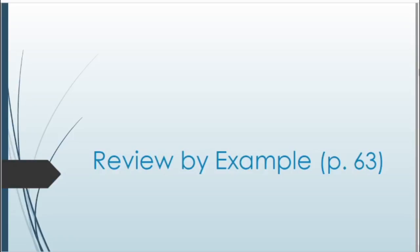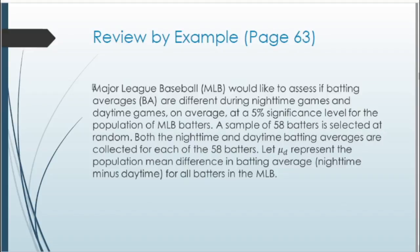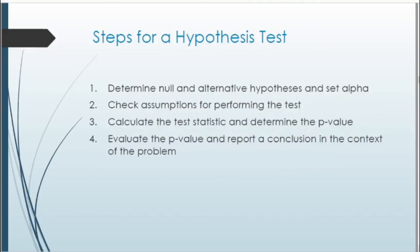Now let's look at the review by example on page 63 of the lab workbook. Major League Baseball wants to assess if batting averages differ between nighttime and daytime games on average at a 5% significance level for the population of MLB batters. A sample of 58 batters is selected. Both nighttime and daytime batting averages are collected for each batter. Let mu sub d represent the population mean difference in batting average, specifically nighttime minus daytime, for all MLB batters.